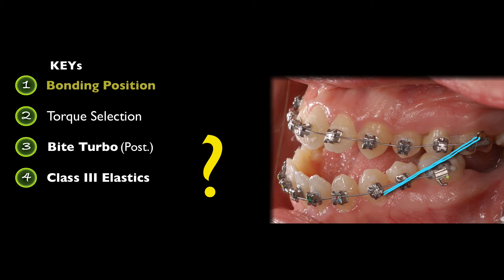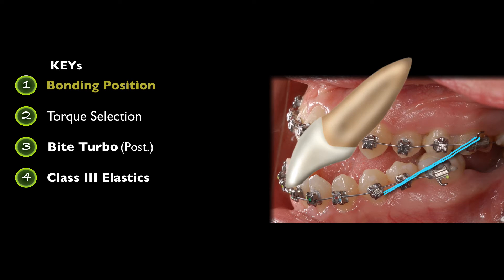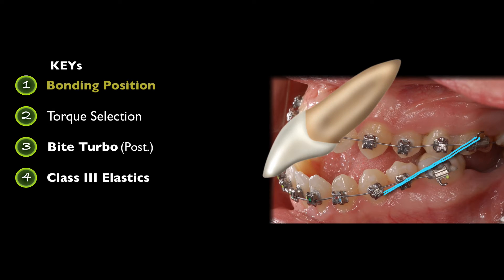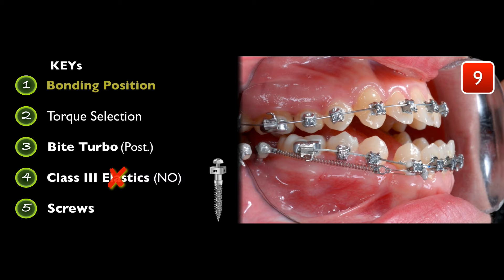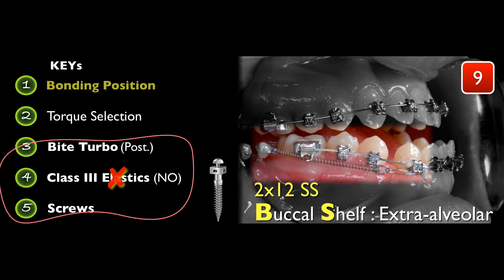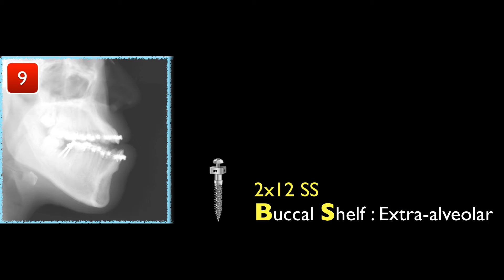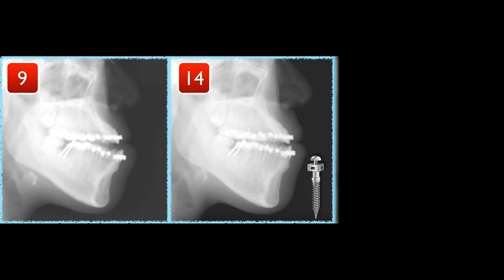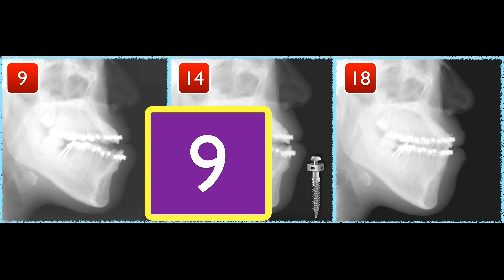Number four: are you going to use Class 3 elastics? If you use Class 3 elastics, it will tend to flare the lower incisors, which is not what we want here. So we are not going to use Class 3 elastics. Instead, we use buccal shelf appliance. The buccal shelf appliance uses 2x4 stainless steel wire. The buccal shelf is extra-oral in nature — remember, it's not between the roots.